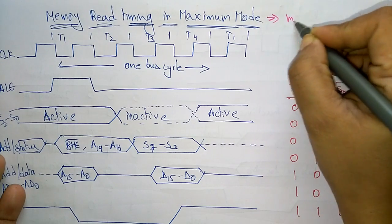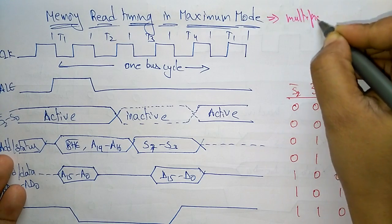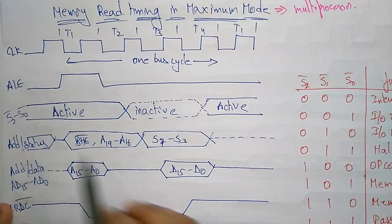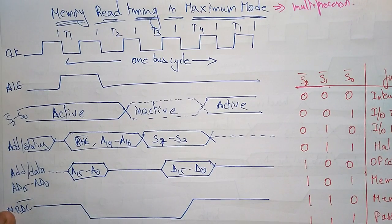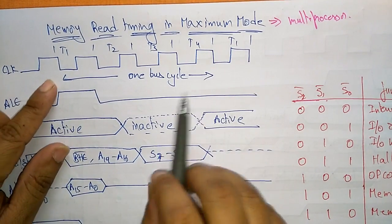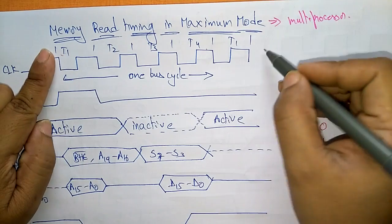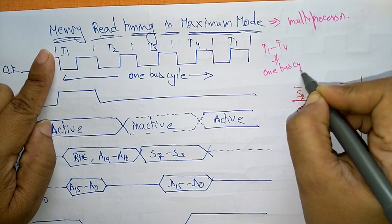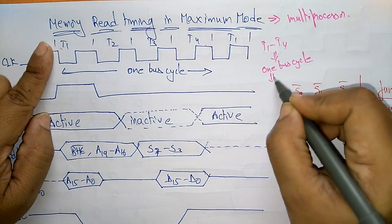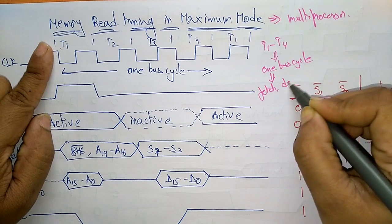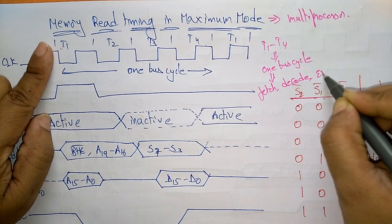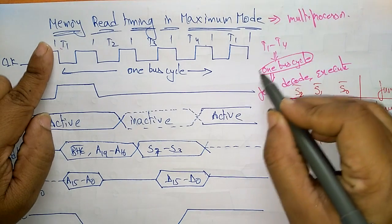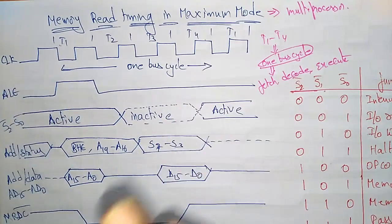Maximum mode supports a multi-processor configuration. Which processor has to be activated will be decided by the status signals S2, S1, and S0. One bus cycle indicates T1 to T4 — that is one bus cycle. In this one bus cycle, three operations are performed: fetch the data, decode the data, and execute the data. These three operations are performed during the four clock pulses.